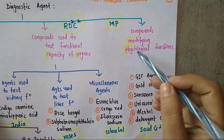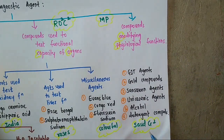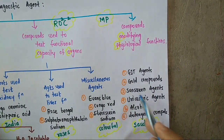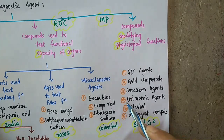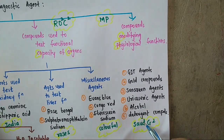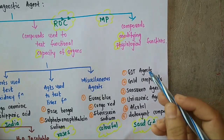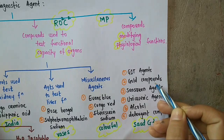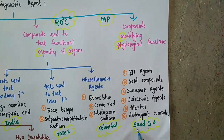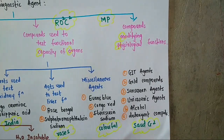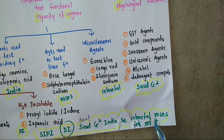So in MP — compounds modifying physiological functions — what are the examples? 'Saudji squared': S is for sunscreen agent, A is for alcohol, U is for uricosuric agent, D is for detergent compound, and G is for GIT agent and gold compound.